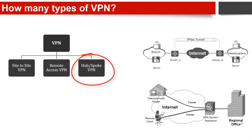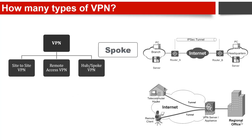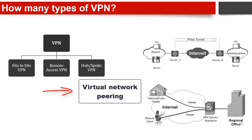The hub is a virtual network that acts as a central location for managing external connectivity and hosting services used by multiple workloads. The spokes are virtual networks that host workloads and connect to the central hub through virtual network peering.